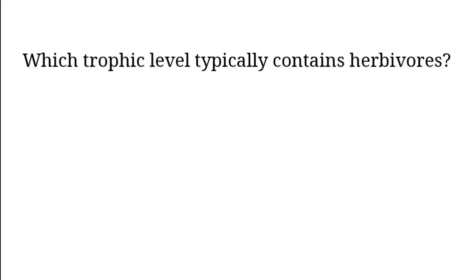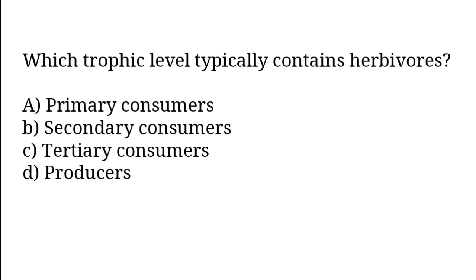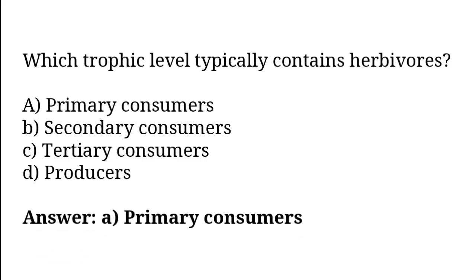Which trophic level typically contains herbivores? Options: Primary consumers, secondary consumers, tertiary consumers, producers. So the correct answer is option A. Primary consumers typically contain herbivores.